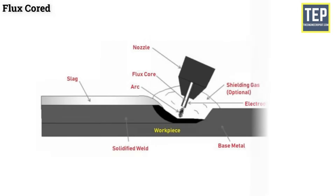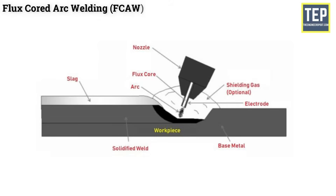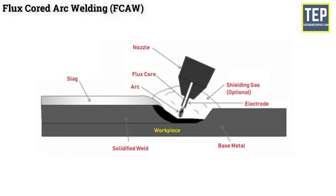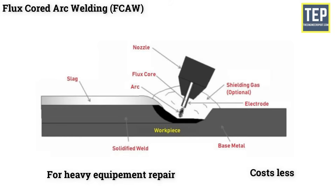Flux cord arc welding is almost similar to MIG welding, and MIG welders can often perform flux cord arc welding. In this welding, the wire has a core of flux that forms a gas shield around the weld. It is usually used for heavy equipment repair. It is a process that does not produce too much waste, and because there is no need for external gas, it also costs less.